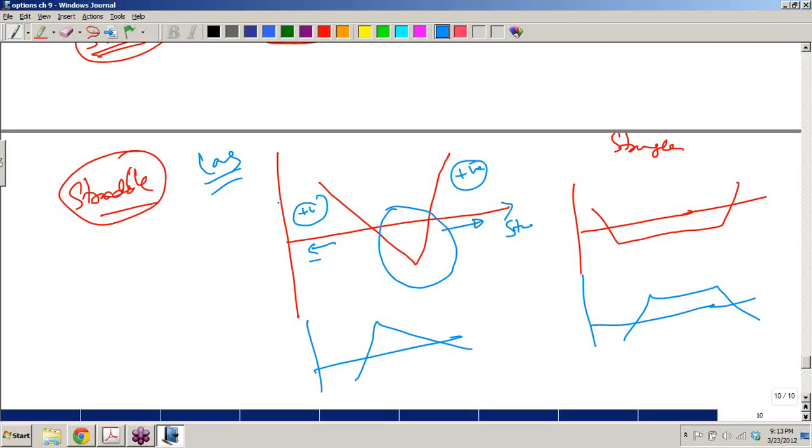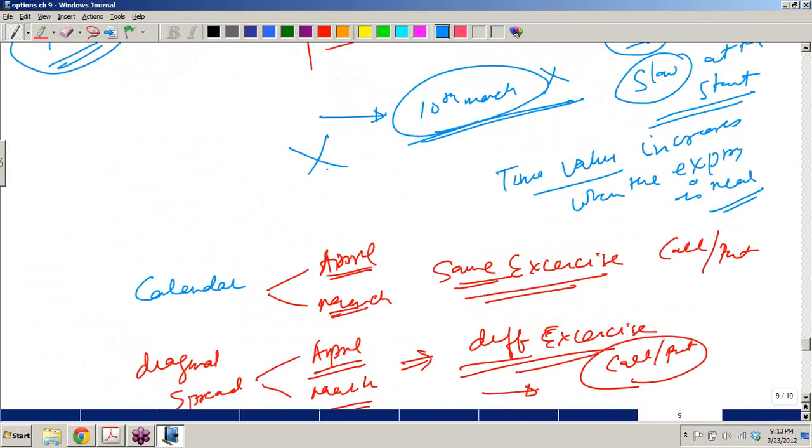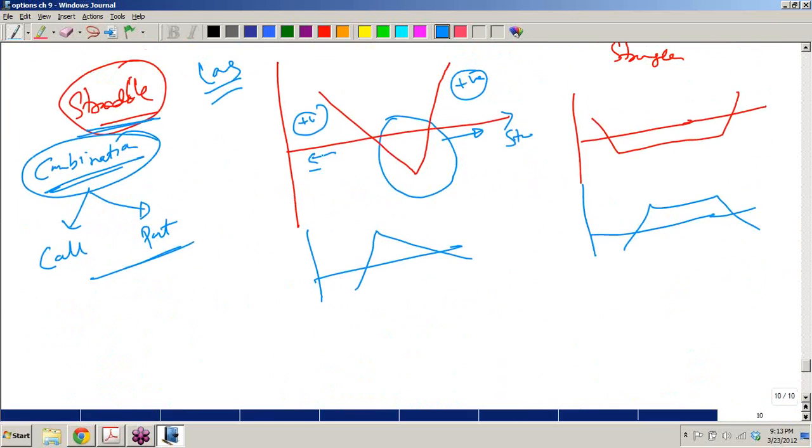Now how can you create this straddle? This straddle is a part of combination. Whenever you have a combination strategy, you have to create it through a combination of call and put. Here in the case of spread strategies, either you are selecting a call or you are selecting a put. In combination strategies, it is a combination of call and put. You have to use a call and you have to use a put.